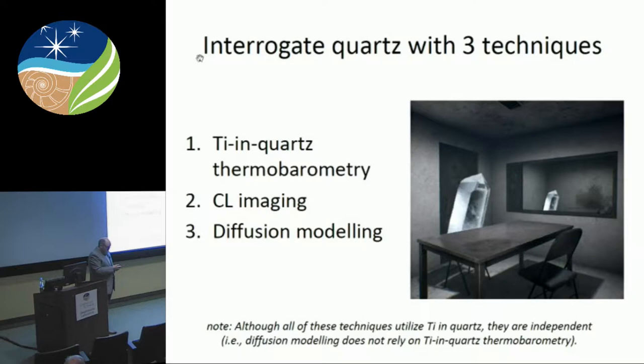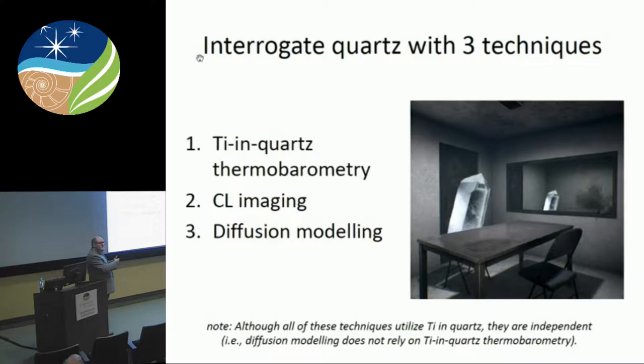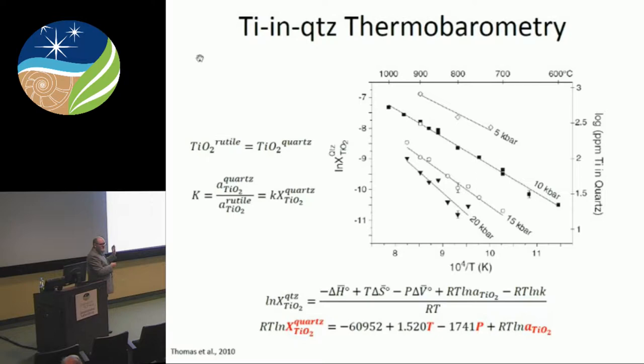What I'm going to use is titanium concentrations in quartz. I'll use three different techniques: titanium-in-quartz thermobarometry, CL imaging — those cathodoluminescence images I showed earlier — and using those CL images I'll extract titanium concentration gradients and do some diffusion modeling. Importantly, all of these techniques, although they all use titanium in quartz, are independent of one another. The CL imaging and diffusion modeling is completely independent of the titanium-in-quartz thermobarometry, so if my results converge, that's a good thing.